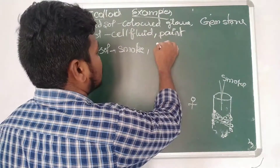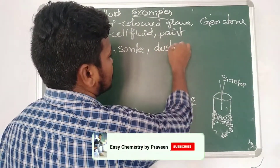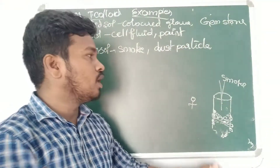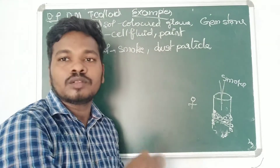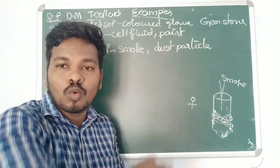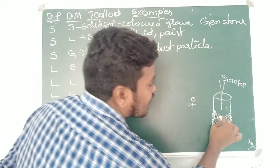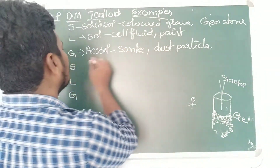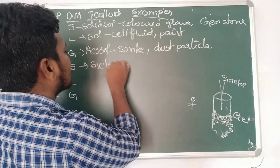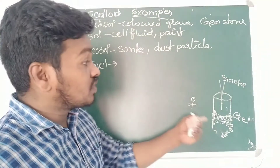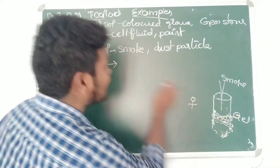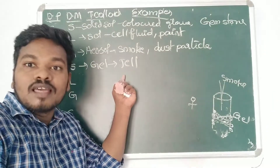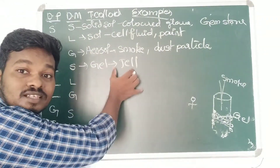When he is heating, some dust particles are also floating on the fluid. Then he stops the boiling, and the fluid cools down. Automatically the fluid converts into a gel. So it is called a gel.